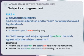Rule four — compound subjects: compound subjects joined by and are always followed by a plural verb. Example: a pen and pencil make writing easy. With compound subjects joined by or or nor, the verb agrees with the subject nearer to it. Example: neither the director nor the actors are following the instructions.